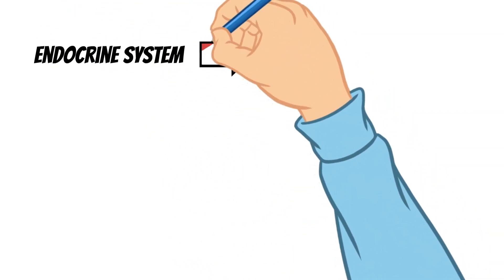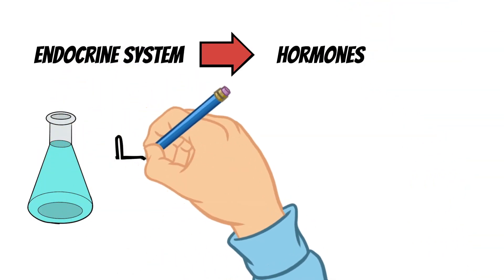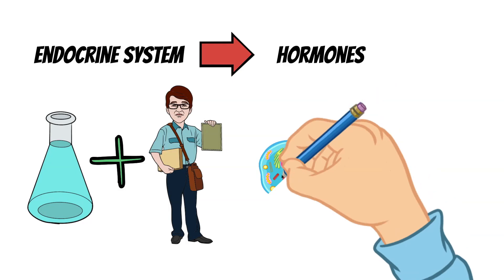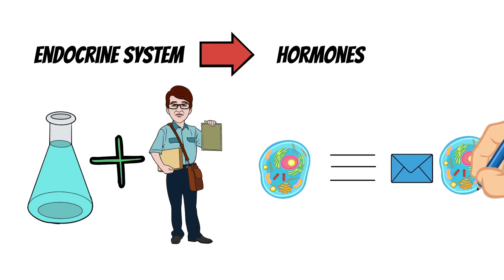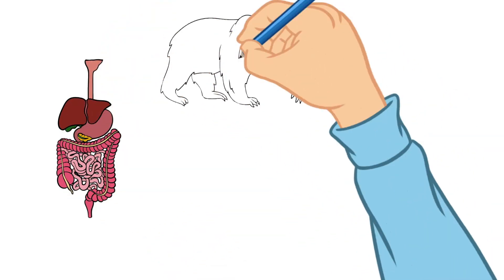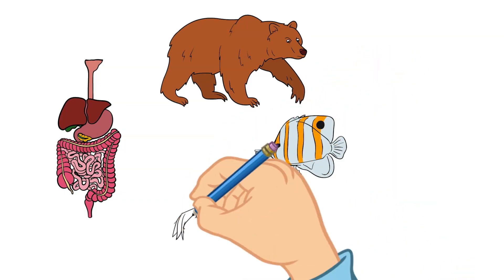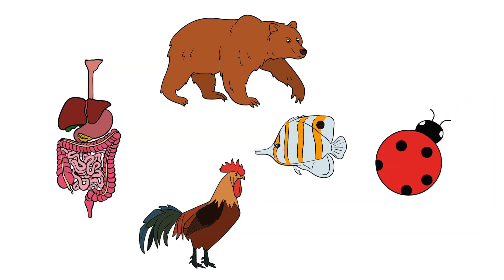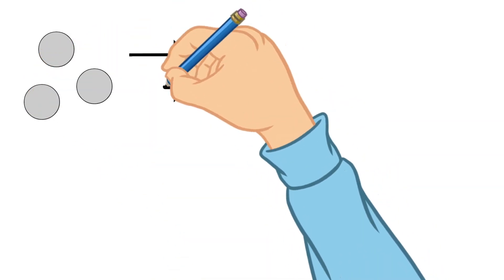The main purpose of the endocrine system is to make hormones. Hormones are the chemical messengers of our bodies — they carry information and instructions from one set of cells to another. The endocrine system impacts all the different organs and processes in our body. Surprisingly, people aren't the only ones with endocrine systems; all animals, including even insects, have them too.